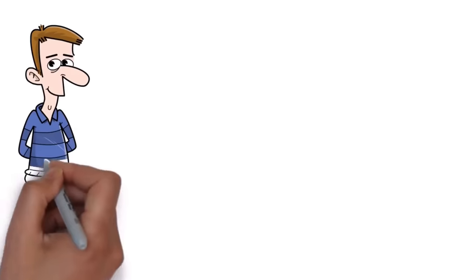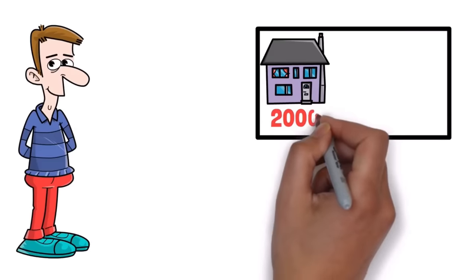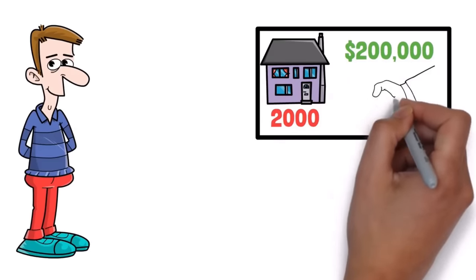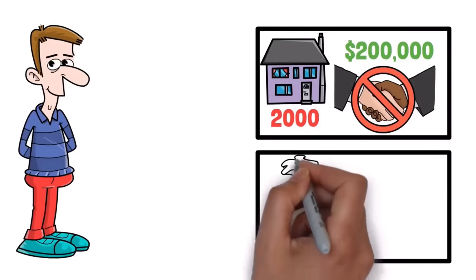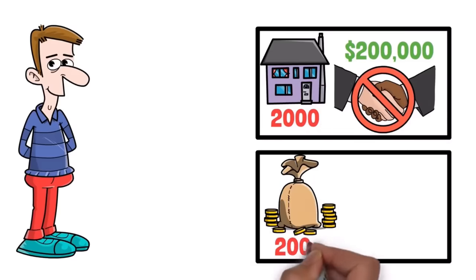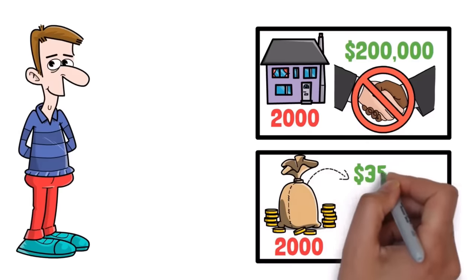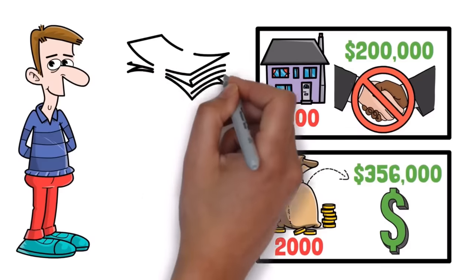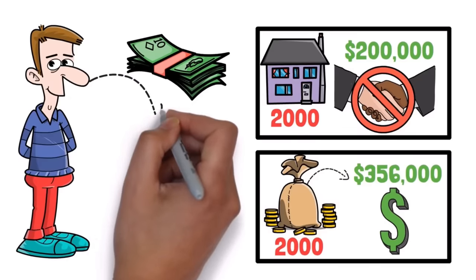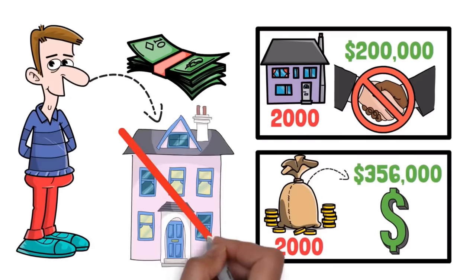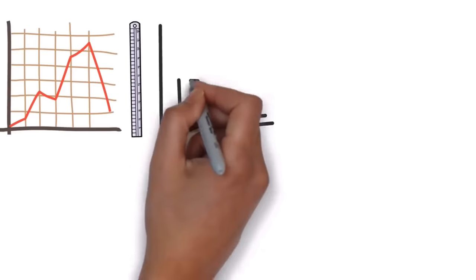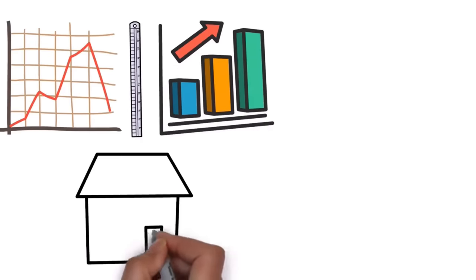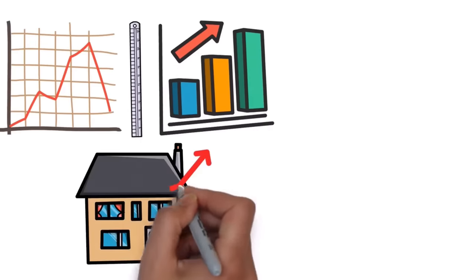When someone says I bought a house in 2000 for $200,000, that doesn't necessarily make it a deal, because $200,000 in the year 2000 is worth about $356,000 in today's 2023 dollars. While on paper this person is up on his home, it's not a real gain. So in order to measure a bubble, we have to adjust for inflation and showcase how much home prices really went up.